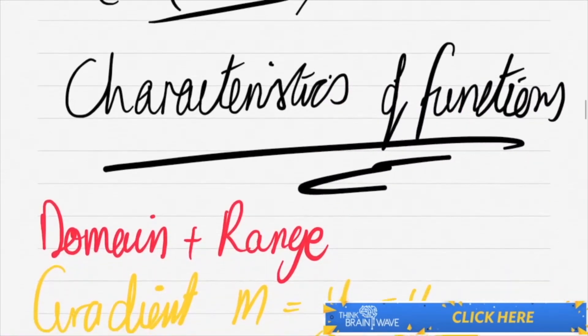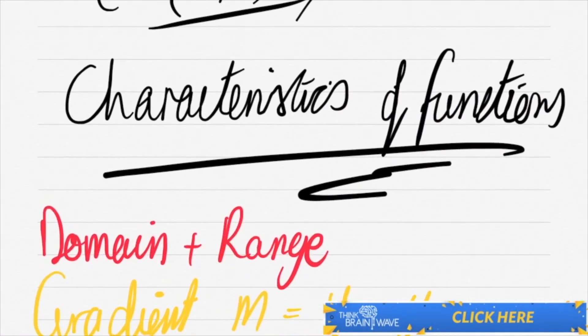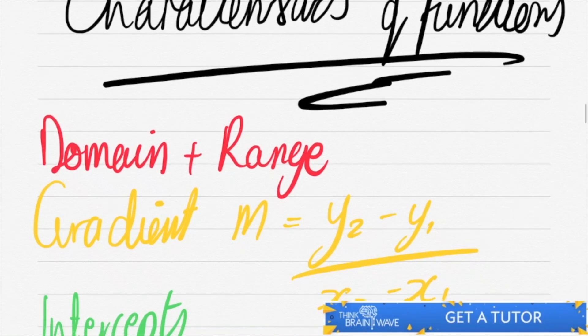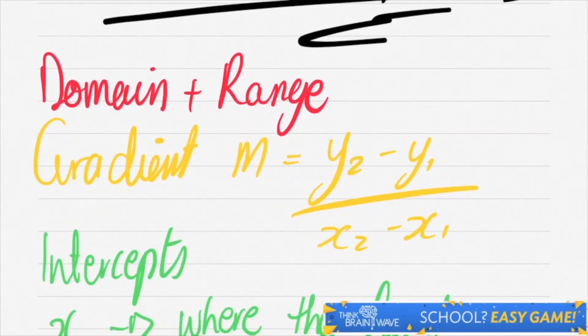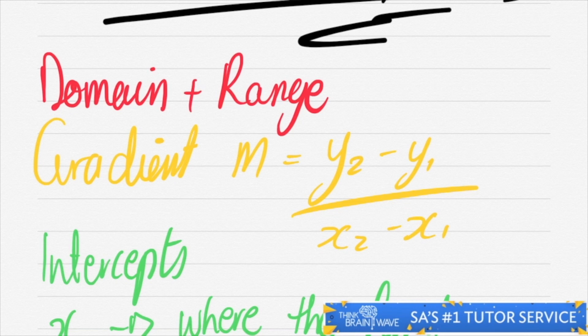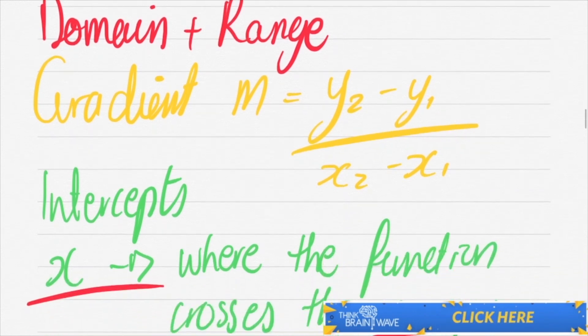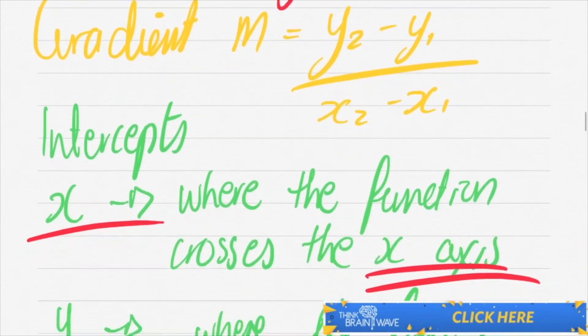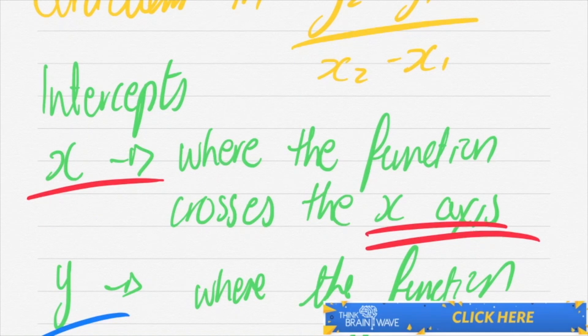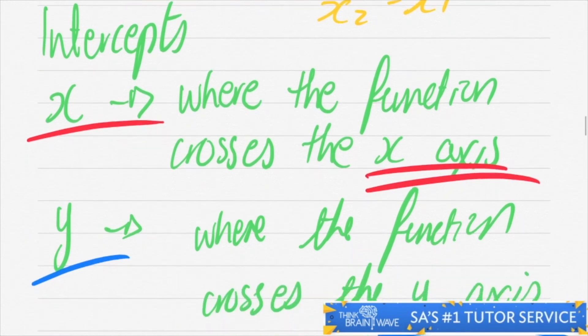Let's talk about the characteristics of functions. We talked about the domain and range, we talked about the gradient. Now let's talk about the intercepts, where the graph cuts the x or the y-axis. The x-intercept is where the function cuts the x-axis and the y-intercept is where the function cuts the y-axis.